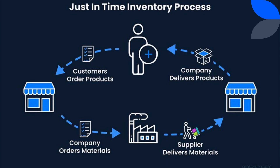Continuous improvement: JIT promotes a culture of continuous improvement and employee involvement. Employees are encouraged to identify inefficiencies, suggest improvements, and participate in problem-solving initiatives to enhance processes, reduce lead times, and increase productivity. Synchronization of production: JIT aligns production schedules with customer demand, ensuring that goods are produced and delivered just in time to meet customer requirements. JIT also covers supplier relationships, flexible manufacturing, quality control, and lean manufacturing principles, emphasizing elimination of waste and optimization of resources.